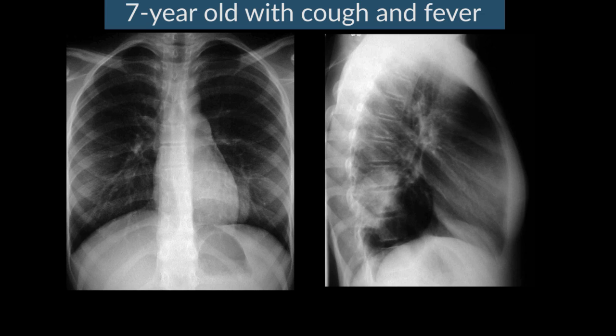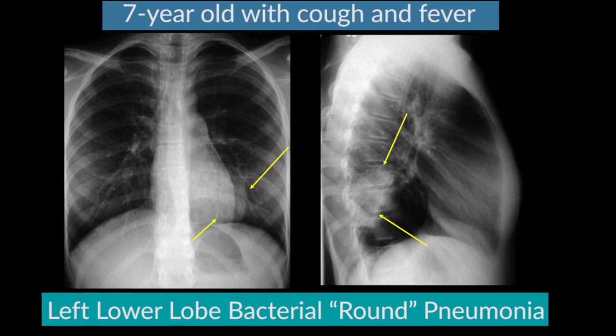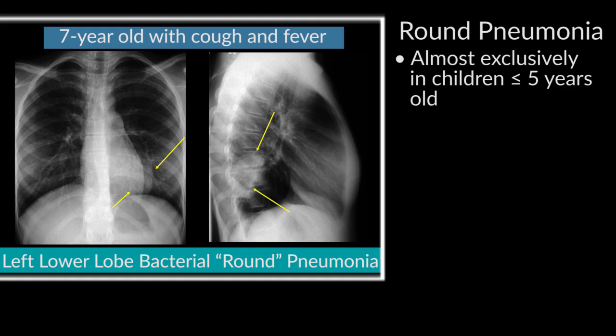Focal parenchymal abnormalities are also very important in pediatrics. This seven-year-old presenting with cough and fever has a retrocardiac density also seen overlying the spine. This is a round pneumonia — a bacterial pneumonia that happens almost exclusively in children less than five years of age — where the pneumonia is mass-like in appearance because of poor development of the collateral air passages, making the pneumonia look very much like a mass, unlike that in adults.